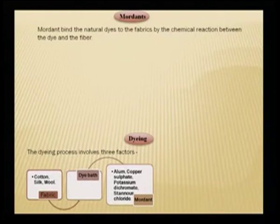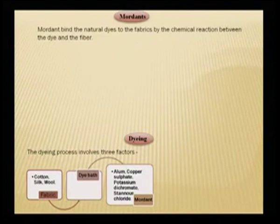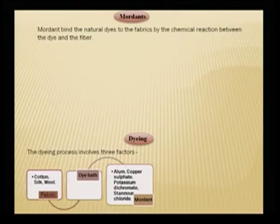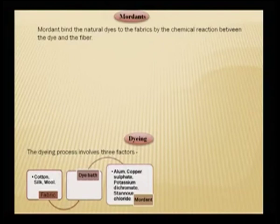Dyeing can also be pre-mordanting, meta-mordanting or post-mordanting — three modes of mordanting. Mordant can be added at the beginning after scouring; for cotton we use tannic acid pretreatment followed by mordanting — if done beforehand, it is called pre-mordanting. If the mordant and dye are put in the same dye bath simultaneously, it is called simultaneous or meta-mordanting. The third option is post-mordanting, where after scouring and dyeing, the fabric is finally mordanted with mordants such as alum, copper sulphate, potassium dichromate and stannous chloride.